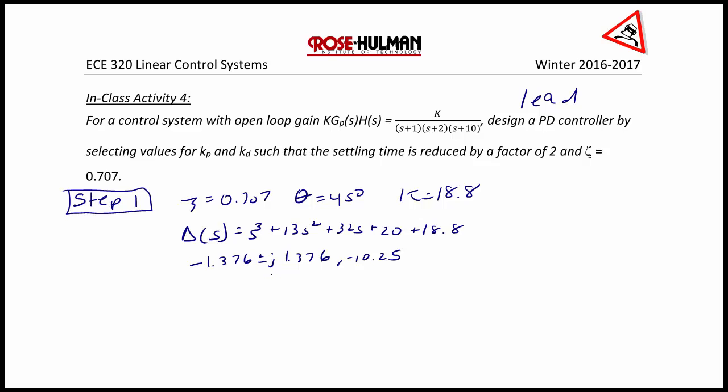The dominant pole is obviously the one with the complex conjugate. So Ts, the settling time, is equal to 4 over 1.376. The settling time for this system is 2.9 seconds.